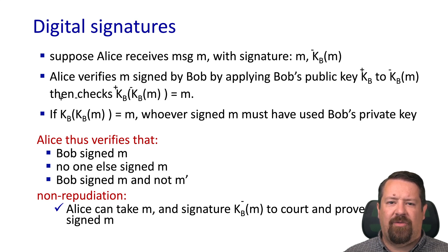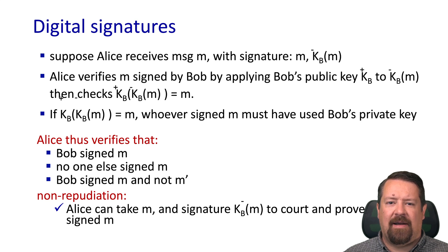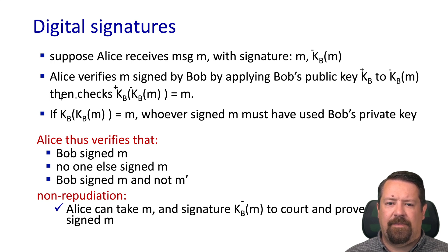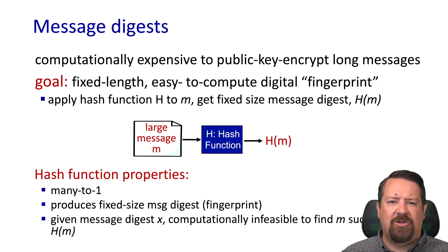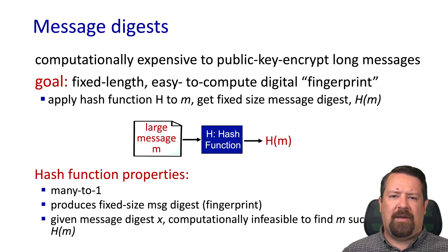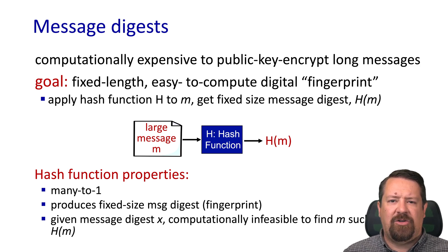This also brings up non-repudiation. If Bob later says 'I never said that,' Alice can use the signature to prove he did because he signed it. However, public key encryption is computationally expensive. If we have a long message, we don't want to encrypt the whole thing using public key cryptography just to prove it hasn't changed.